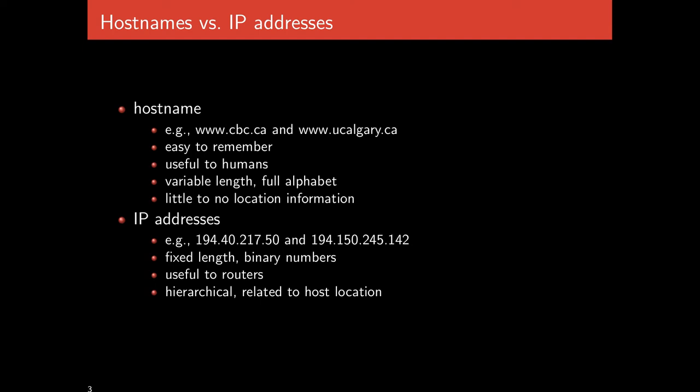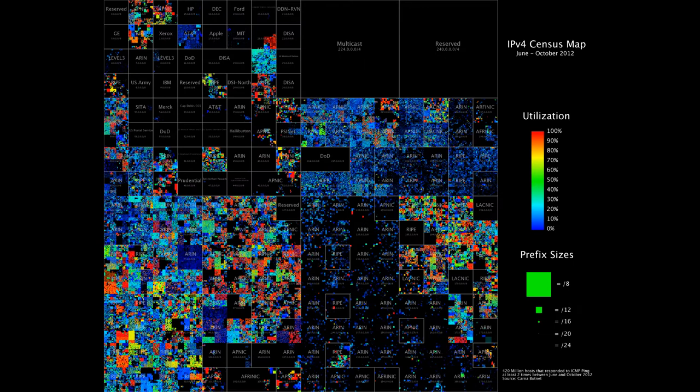Hostnames don't have a fixed length — they're not exactly 32 bits. They can be arbitrarily long, using ASCII letters, the full alphabet. It's hard to simply tell your ISP a word and have them know exactly where to route you. Thus, we use DNS to translate from hostnames to IP addresses.